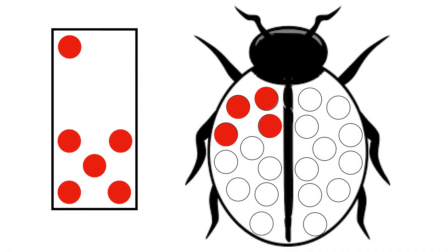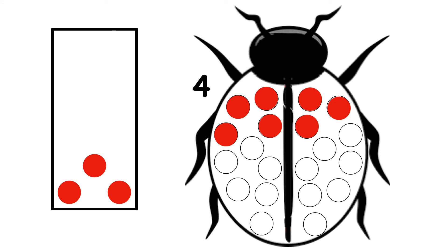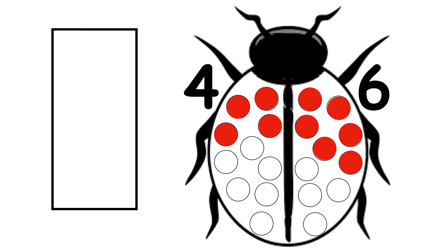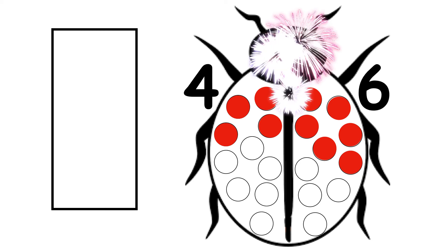Ladybird has 4 spots. How many more does she need to make 10? 1, 2, 3, 4, 5, 6. 4 and 6 make 10.